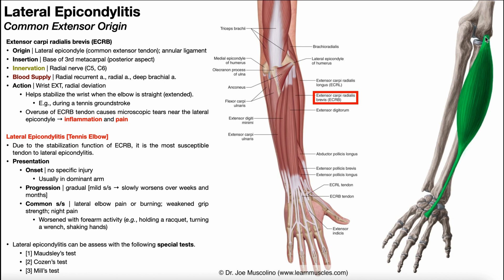If we follow down here, we see the muscle belly of ECRB, and then about two-thirds of the way down the forearm, it narrows into a tendon, which goes down here and attaches onto the posterior aspect of the base of the third metacarpal. So when this muscle contracts, it pulls distally to proximally, and it's going to help extend the wrist — wrist extension is one of its actions. We could say that it's going to extend specifically at the third digit.